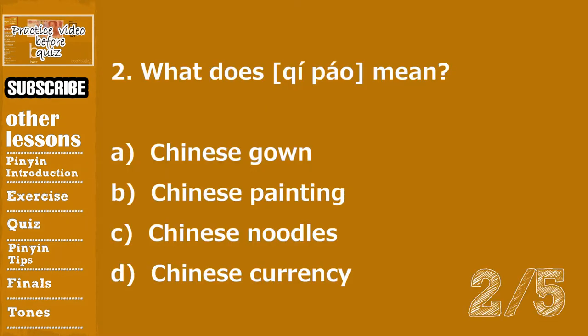Question number two. 第二题. What does 旗袍 mean? A. Chinese gown. B. Chinese painting. C. Chinese noodles. D. Chinese currency.